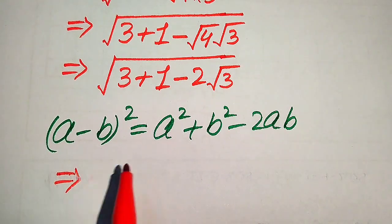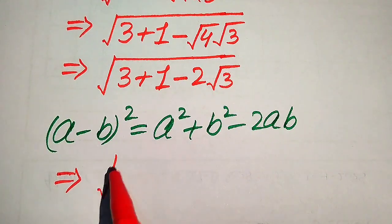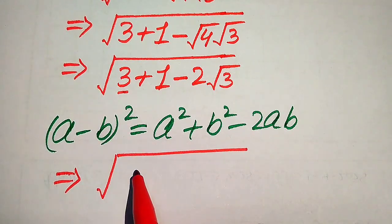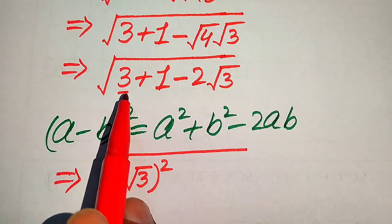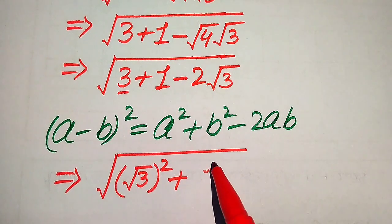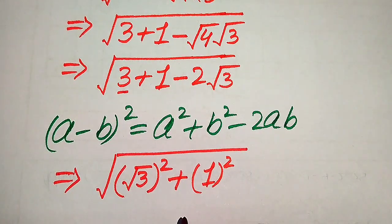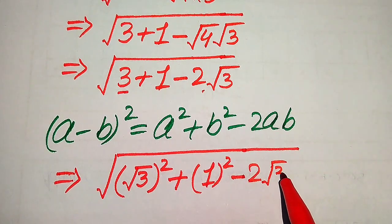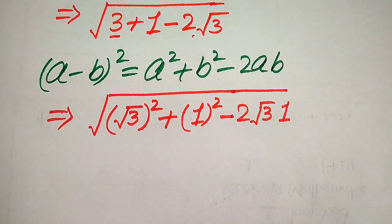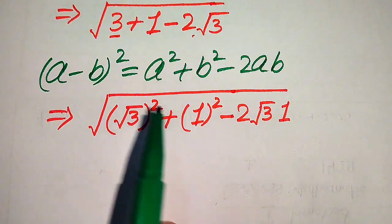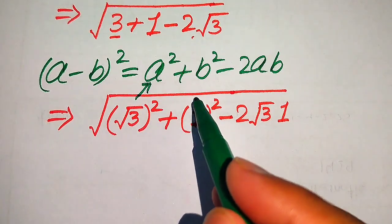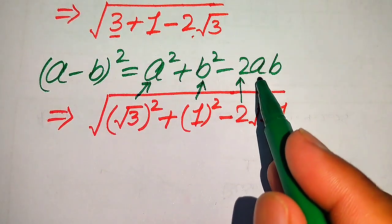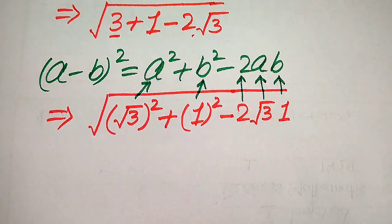We rewrite the expression as: square root of 3 (to match the scale of the terms), plus 1 written as 1 squared (since 1 squared equals 1), minus 2 times square root of 3 times 1. Comparing to the formula, this term is a squared, this is b squared, and 2ab gives us the value of a as square root of 3 and b as 1.